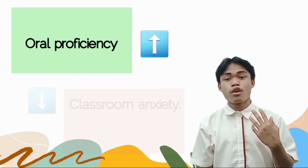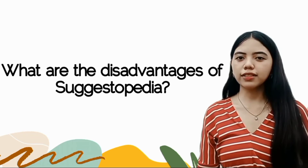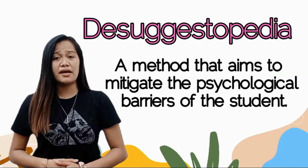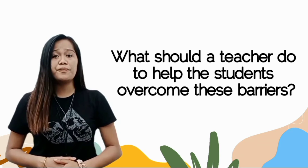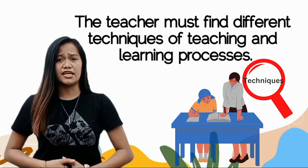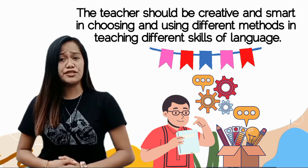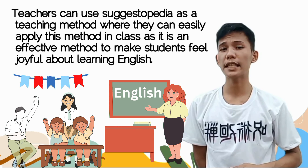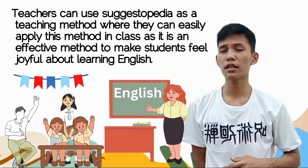Suggestopedia increases oral proficiency and lowers classroom anxiety. Suggestopedia is a method that aims to mitigate the psychological barriers of the student. To help students overcome these barriers, teachers must find different techniques in the teaching and learning process. The teacher should be creative and smart in choosing different methods for teaching language skills. Teachers can apply Suggestopedia as a teaching method in class, as it is an effective method to make students feel joyful about learning English.